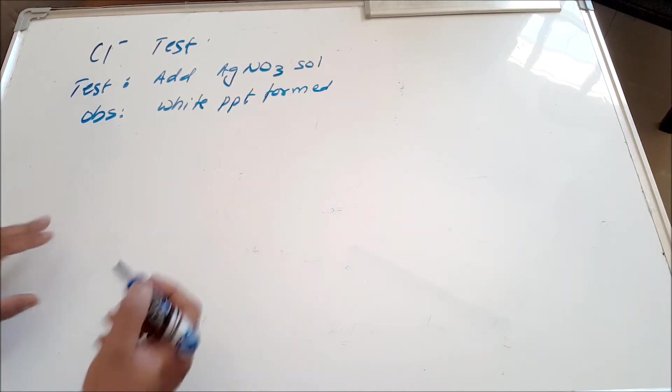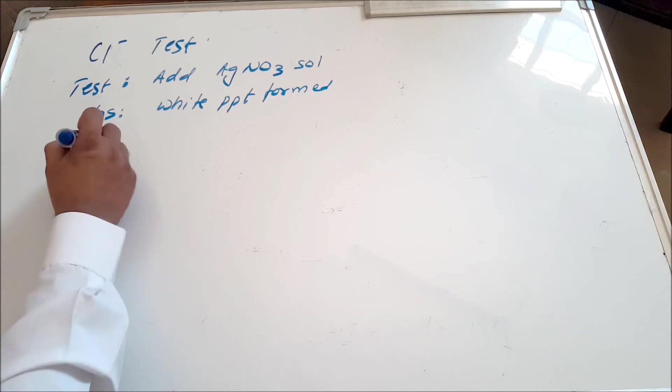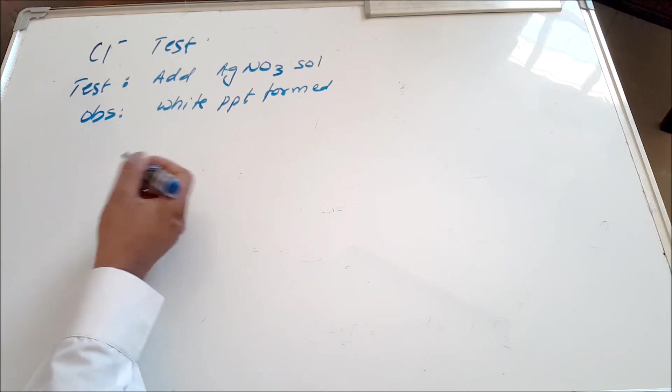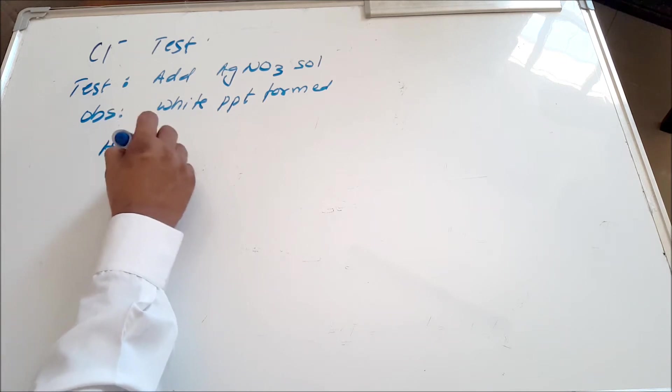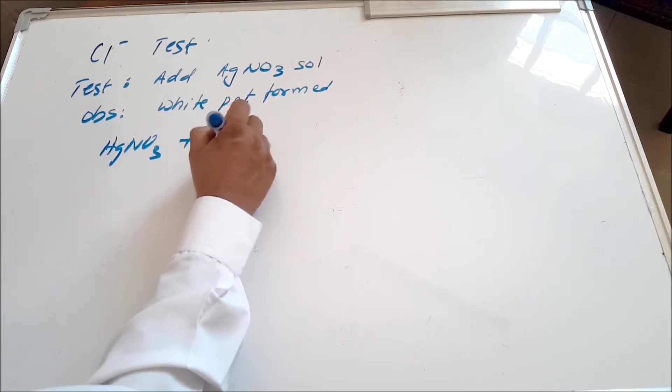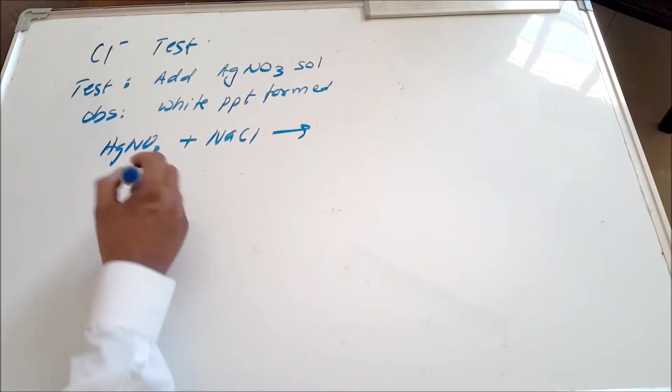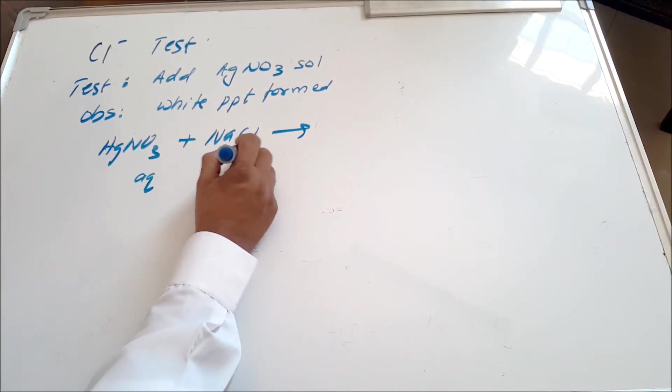Now you have to be able to explain why that white precipitate is being formed. For example, I can give you a solution which consists of chloride ions. I'm using AgNO3, so let's say I use sodium chloride. I need anybody who can give me a chloride ion. This is a solution.